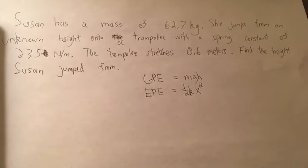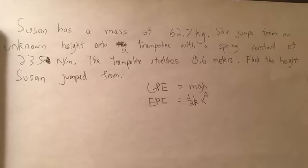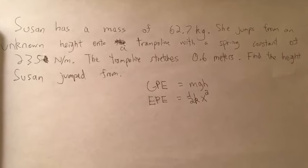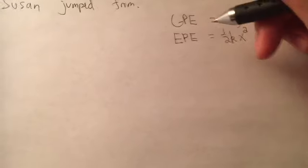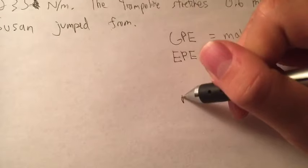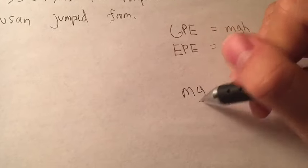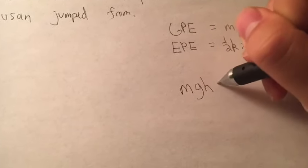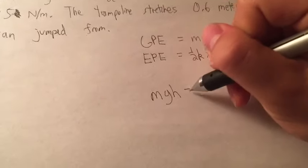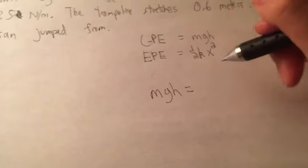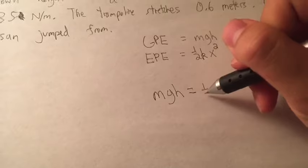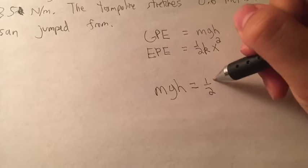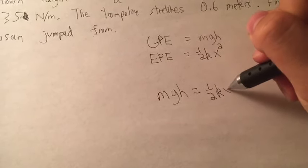Now, because Susan jumped from an unknown height onto the trampoline, we can set the gravitational potential energy, which is where the height she jumped from, set that equal to the elastic potential energy, which is when she jumps onto the trampoline.